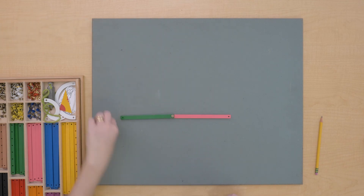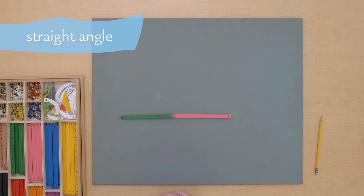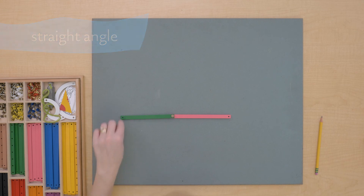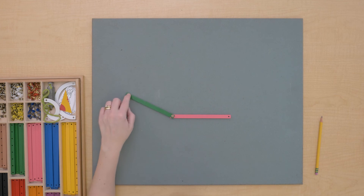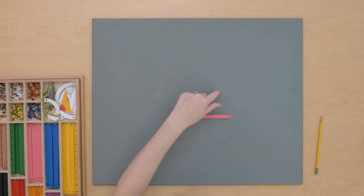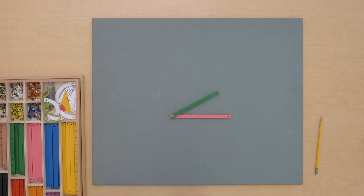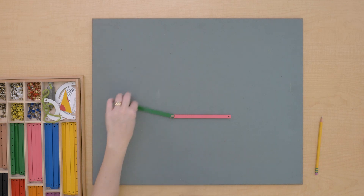And this one is a straight angle. So we have a right angle, obtuse angle, acute angle, and straight angle.